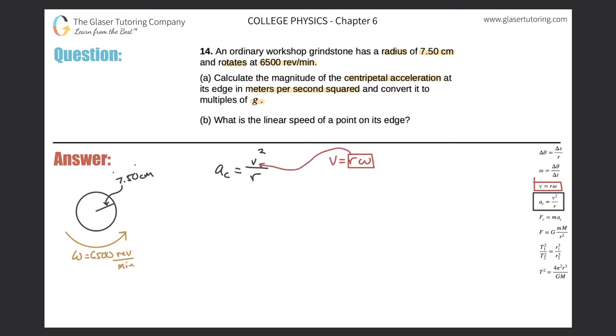All right. And when we do that, let's see what happens. We get the centripetal acceleration being equal to r omega squared all over r.